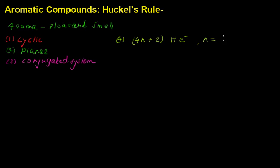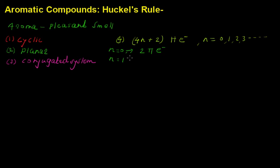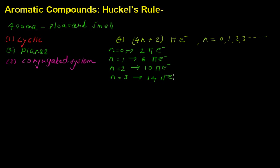Here n is a set of integers starting from 0, 1, 2, 3, and so on. When n = 0, the value of 4n + 2 gives 2 pi electrons. When n = 1, this gives 6 pi electrons. When n = 2, this gives 10 pi electrons. When n = 3, this gives 14 pi electrons, and so on.